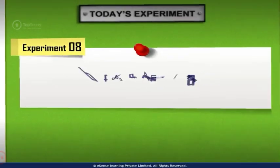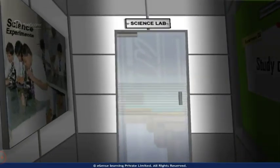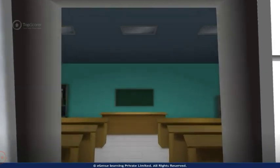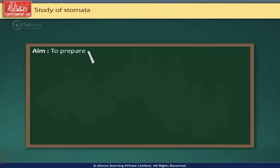Experiment 8: Study of Stomata. The aim of the experiment is to prepare a temporary mount of leaf peel to show its stomata.